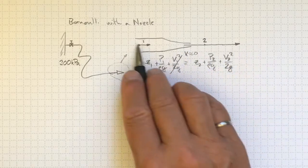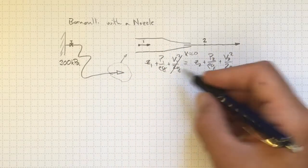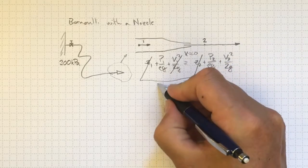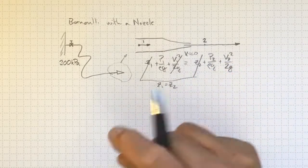Likewise, if this nozzle is horizontal, the elevation doesn't change between location 1 and location 2. So whatever z1 is, z2 is the same.